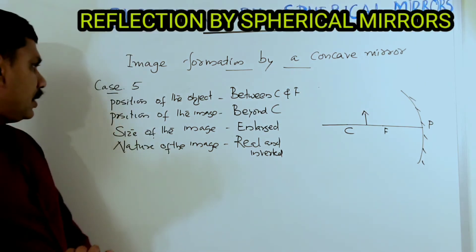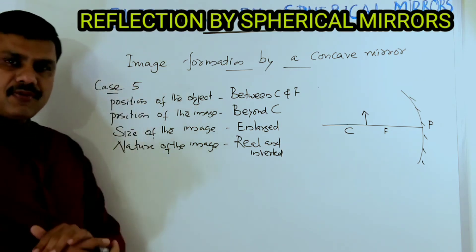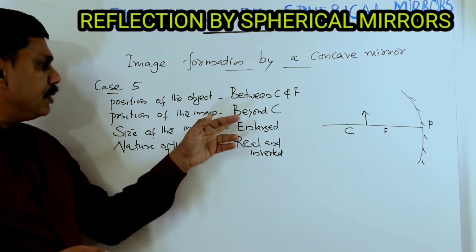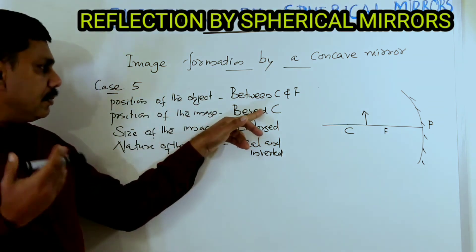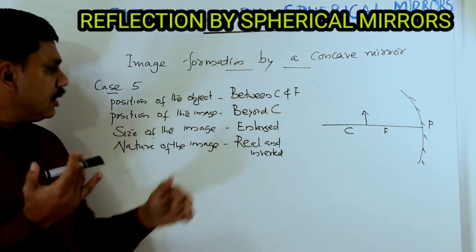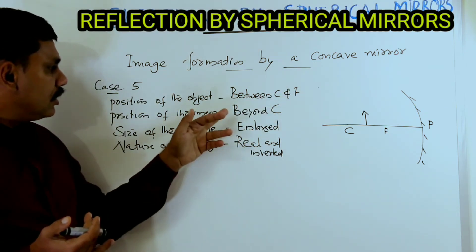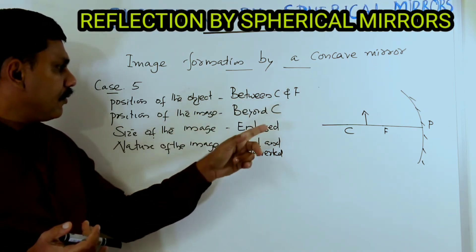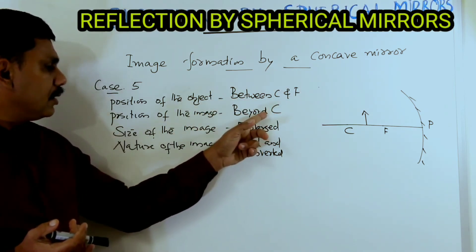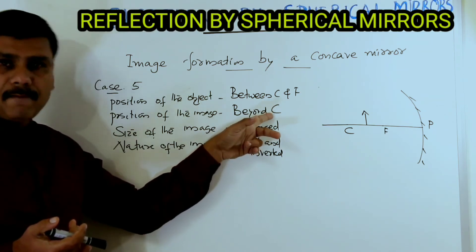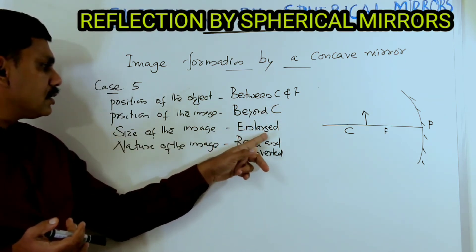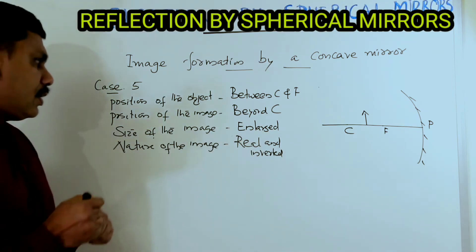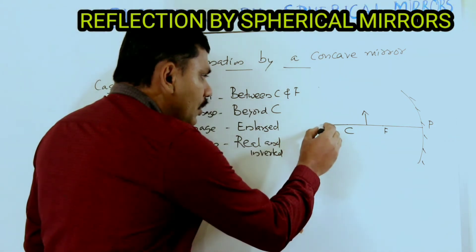Case number five is just the opposite of case number four. In case four, the object was beyond C and the image formed between C and F. Here the things are reversed: the object is placed between C and F, and the image forms beyond C. The image is enlarged, and the nature is real and inverted.